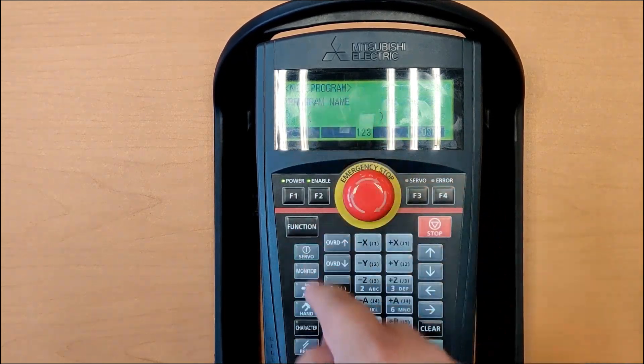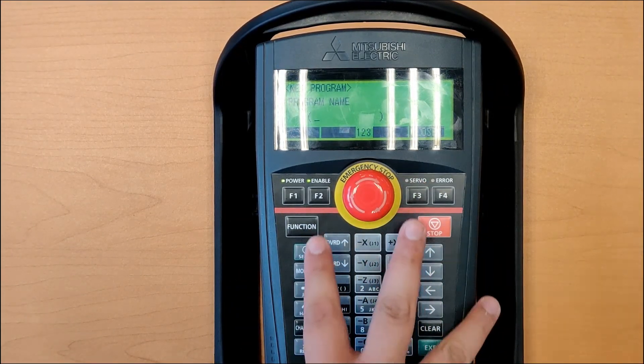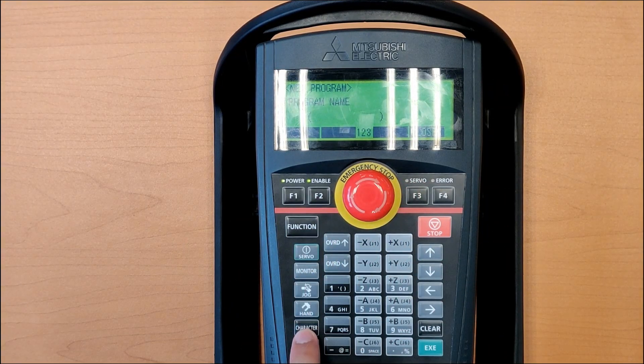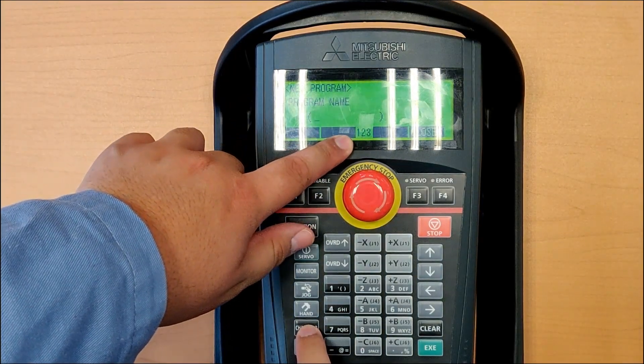We are going to click new, or we can copy one, and we're going to name the program. The first step is that you know that we have a character button here that will change from ABC to 123.